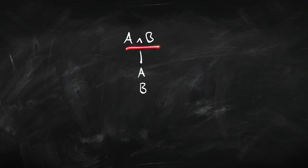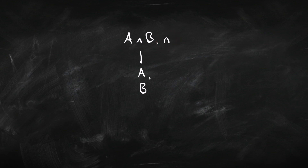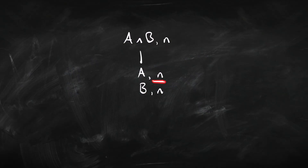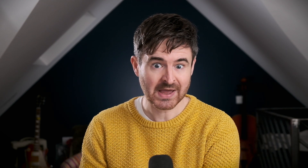All of the rules from propositional logic carry over — we just add the tags, but those rules don't do anything with the tags. For instance, here is the conjunction rule: if you've got a conjunction A-and-B tagged with some number, the rule tells you to add A and B to the branch with that same tag. So if you've got A-and-B tagged 9, you write A tagged 9 and B tagged 9. Whatever number is in the premise, the same number goes in the conclusion.